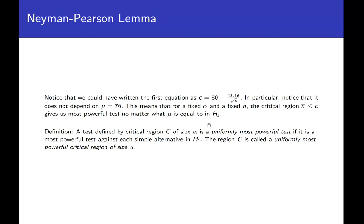We refer to C as the uniformly most powerful critical region of size alpha. In the previous example, the region defined by X bar less than or equal to C is uniformly most powerful because, given alpha and sample size, C doesn't depend on the alternative mean at all. Note: being the most powerful test does not tell you what the power actually is — the power might still be very small, but it's the best you can achieve.